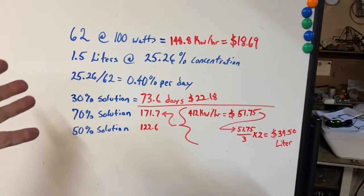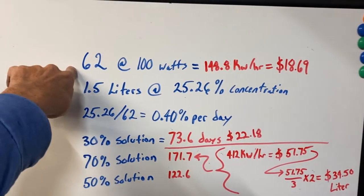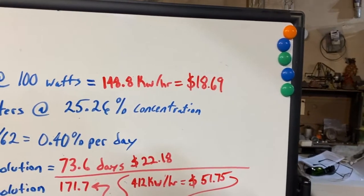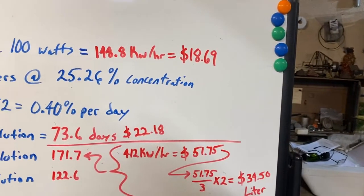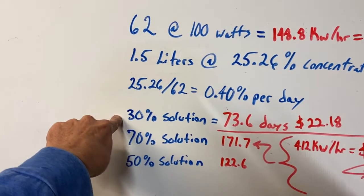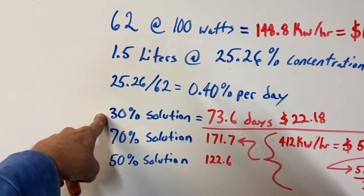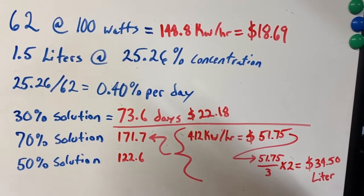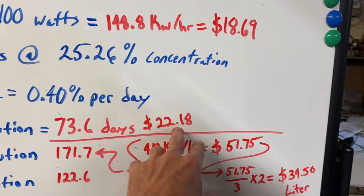Alright fellas, here's a quick look at the brass tacks. So, 62 days at 100 watts is 148 kilowatt hours. That comes out to $18.69. If we were to make a 30% solution, which is strong enough for stainless steel passivation, that would be $73. Or, I'm sorry, that'd be $22.18.